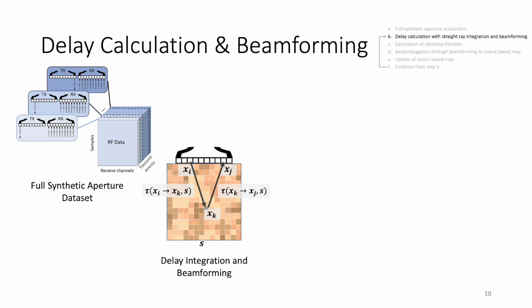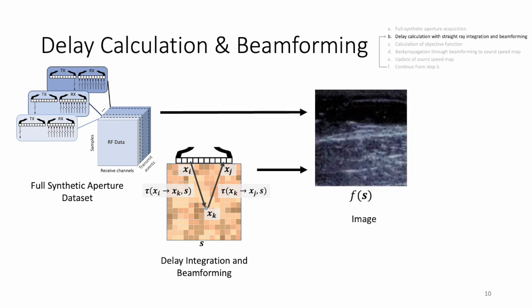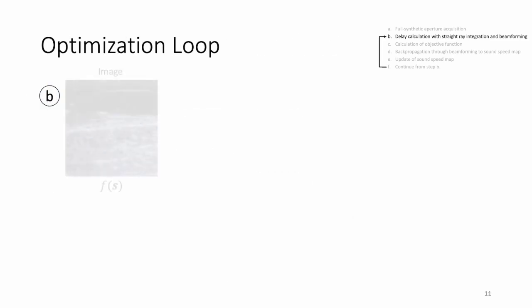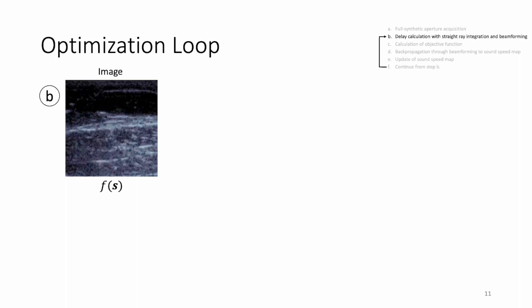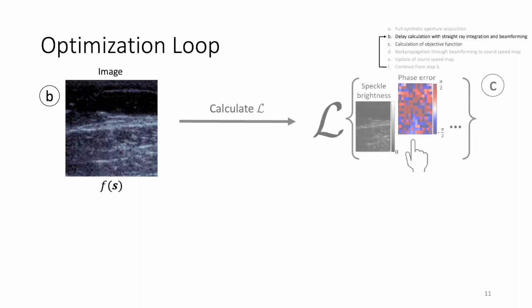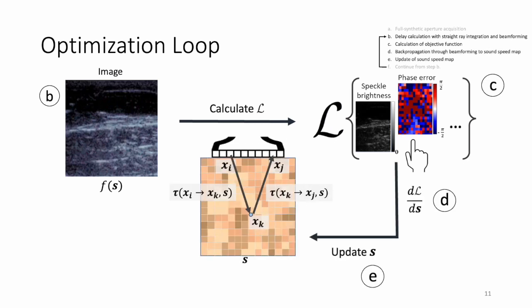After sampling, the low-resolution images for every transmit and receive pair can be coherently compounded to generate a beam-mode image. Given our beam-formed image, an image-focus criterion can be used as a loss term, and the gradients of that loss with respect to the sound speed map can be calculated via backpropagation. This process is then repeated until convergence.